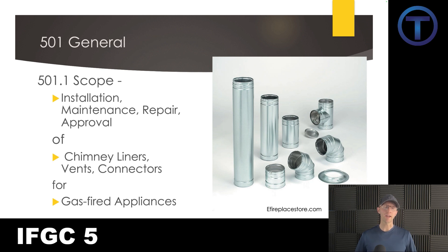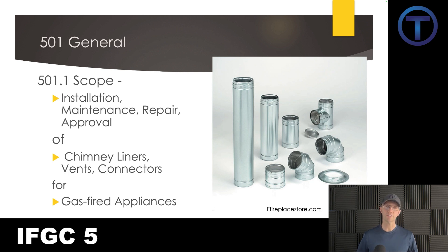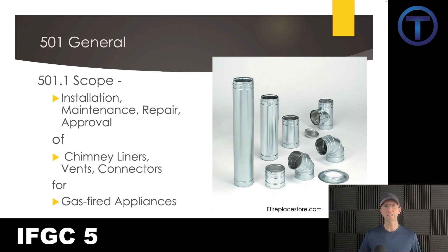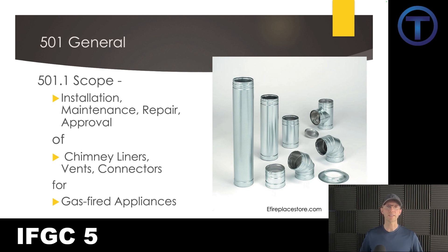501.1 states that this chapter is going to cover the installation, maintenance, and repair and the approval of chimney liners, vents, and connectors specifically for gas-fired appliances. Of course every gas appliance is going to need some way to get the exhaust out, and these chimneys, liners, vents, and connectors are all essential to getting those gases safely outside the building.